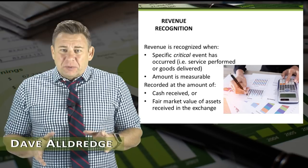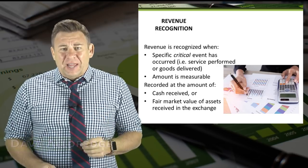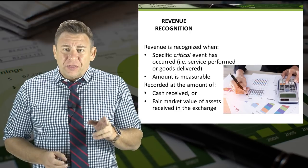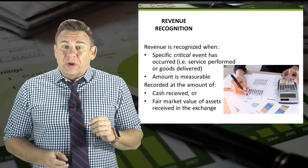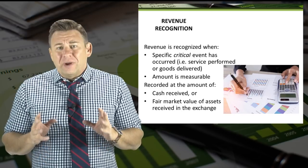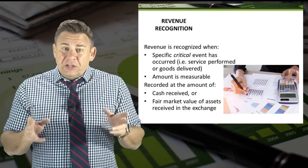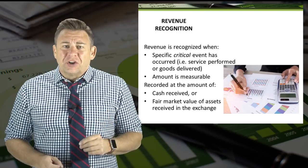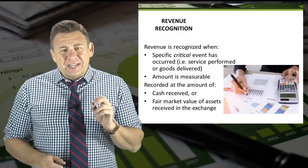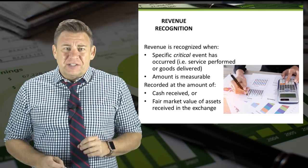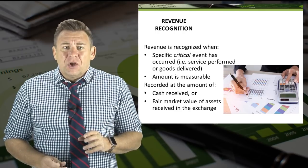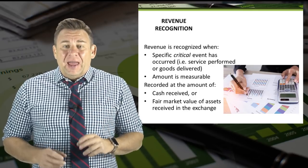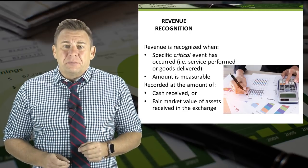As we learn more about receivables, we need to consider the underlying events that create receivables. To start with, let's revisit revenue recognition. Revenue is recognized — meaning journalized — when service is performed or goods are delivered. The FASB has since revised this definition to say that revenue is recognized when a specific critical event has occurred and the amount of revenue is measurable.